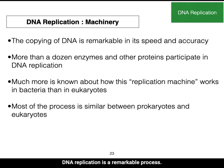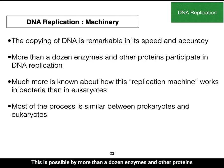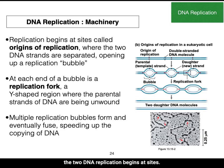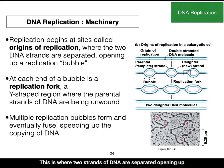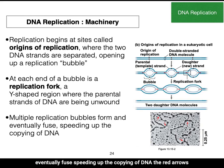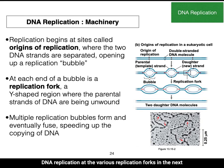DNA replication is a remarkable process — fast and very accurate — made possible by more than a dozen enzymes and other proteins. Scientists know much more about replication in bacteria than in eukaryotes, though much of the process is similar. Replication begins at sites called the origin of replication, where two strands of DNA are separated, opening up and forming a bubble. At each end of the bubble, a replication fork is produced — a Y-shaped region where the parental strands begin to unwind. Multiple replication bubbles form and eventually fuse, speeding up the copying of DNA.